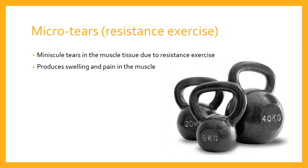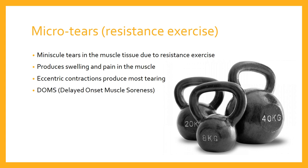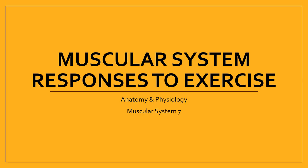If you're doing work involving plyometrics or lots of eccentric contractions — braking and slowing movements — you are likely to have a large number of micro tears. In the short term, these micro tears produce swelling and pain in the muscle. Eccentric contractions are particularly associated with what we call DOMS — Delayed Onset Muscle Soreness — that soreness you feel around 24 to 48 hours after a bout of exercise. That's it for muscular system responses to exercise. We'll see you next time — thanks for listening.